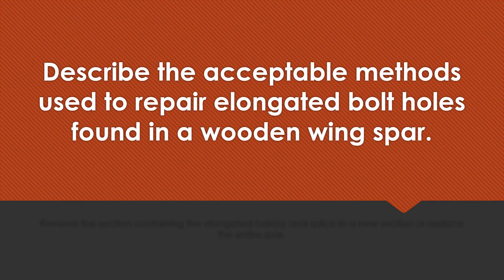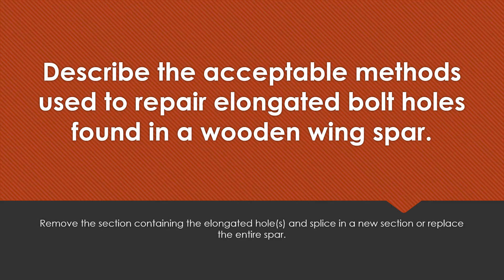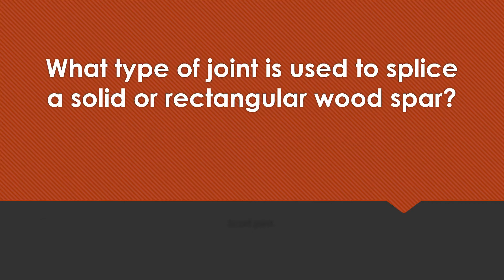Describe the acceptable methods used to repair elongated bolt holes found in a wooden wing spar. Remove the section containing the elongated bolt holes and splice in a new section, or replace the entire spar. What type of joint is used to splice a solid or rectangular wood spar? A scarf joint.